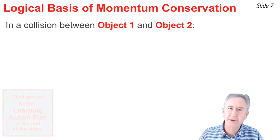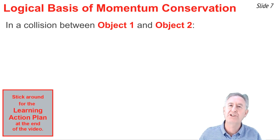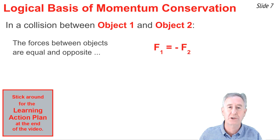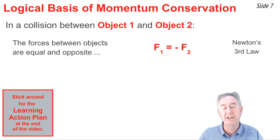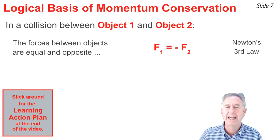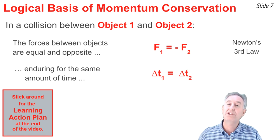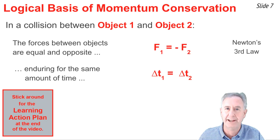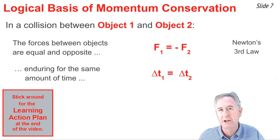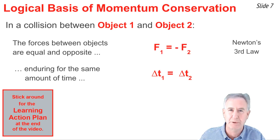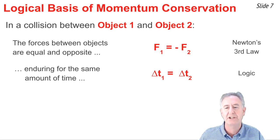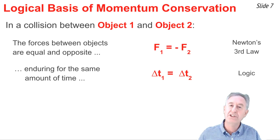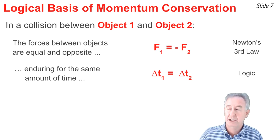It's always appropriate to ask: how do we know this is true? Let's go through a logical proof of momentum conservation. In any collision between object one and object two, we know from Newton's third law that the forces are equal and opposite — F1 equals negative F2. From logic, we know the time at which these forces act must be the same, because they result from contact. Object one can't contact object two for a different time than object two contacts object one. So the time for which force one acts equals the time for which force two acts.